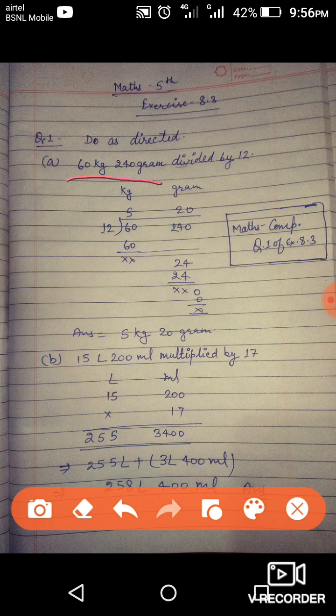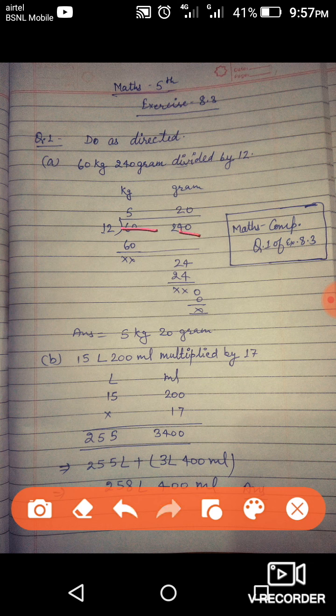Question A: 60 kilogram 240 gram divided by 12. We need to divide 60 kilogram and 240 gram by 12. Kilogram and gram, we can write 60 kilogram and 240 gram divided by 12.